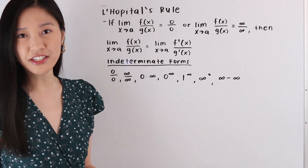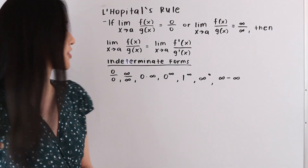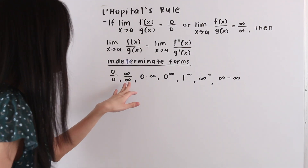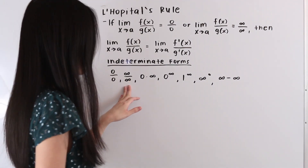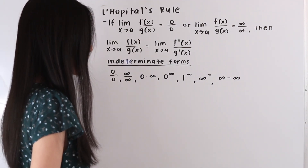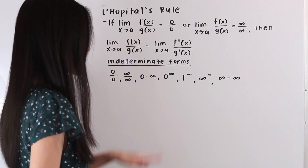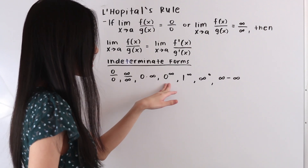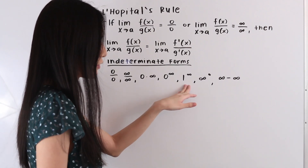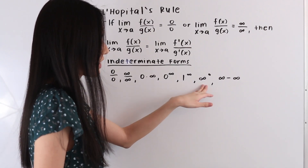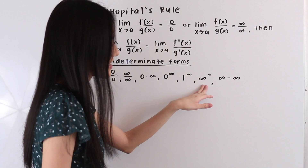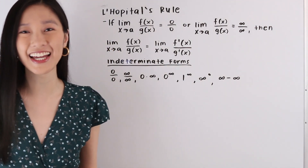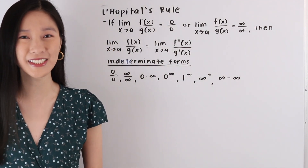In our last video we learned how to solve indeterminate forms of the form 0/0 and infinity over infinity. In this video we'll be learning how to solve indeterminate forms such as 0 times infinity, 0 to the infinity, 1 to the infinity, infinity to the 0, and infinity minus infinity. So let's go ahead and take a look at some examples.